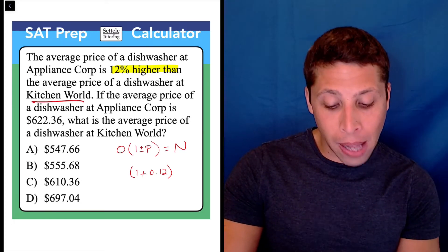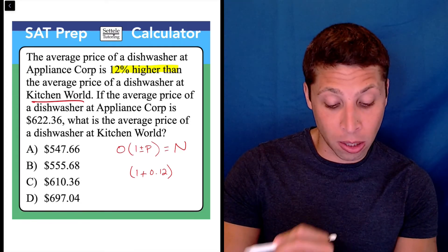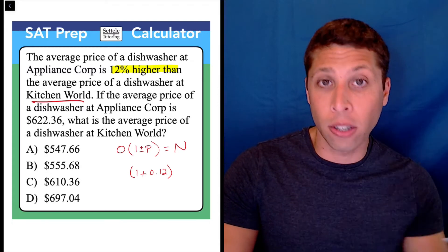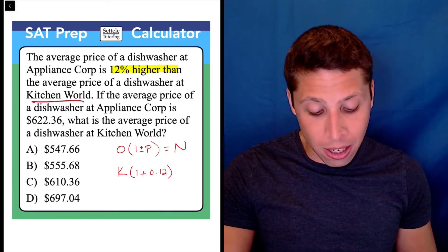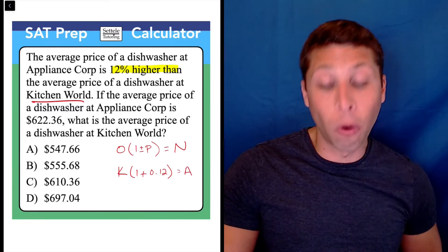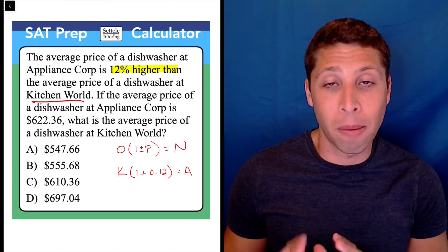Appliance Corp's dishwasher is 12% higher than the dishwasher at Kitchen World. That's our starting value. So Kitchen World is going to go here, and then Appliance Corp is going to go over here. I'm purposely not writing the numbers in just yet.